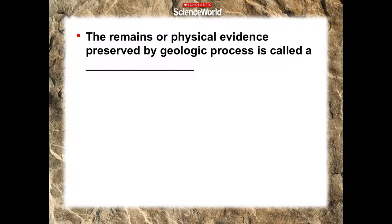So these are remains or physical evidence preserved by geologic process. What is geologic? What's geo? Earth. So basically it's talking about remains or physical evidence — stuff that has been kept the way that it was by earthly processes. Remains means something that's left over. Fossils. You'll notice in this lesson everything in orange is the things you're writing.